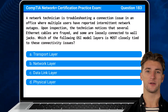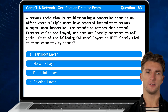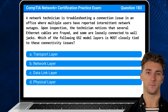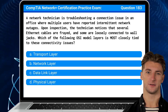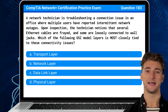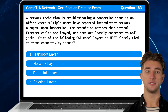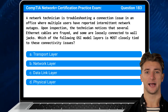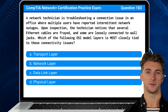Question 183. A network technician is troubleshooting a connection issue in an office where multiple users have reported intermittent network outages. Upon inspection, the technician notices that several ethernet cables are frayed and some are loosely connected to wall jacks. Which of the following OSI model layers is most closely tied to these connectivity issues?